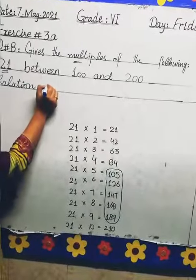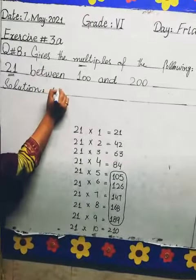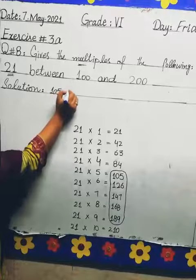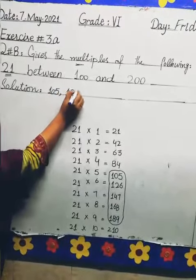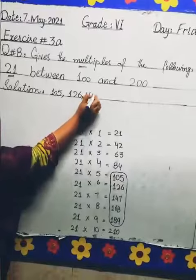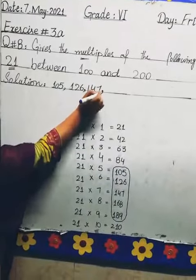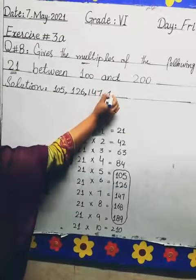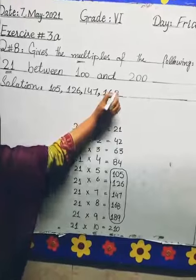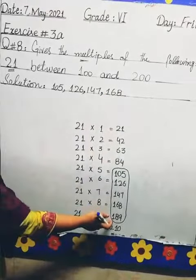What is our solution? The answers are: 105, 126, 147, 168, and the last one is 189.